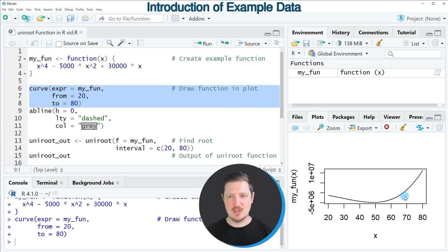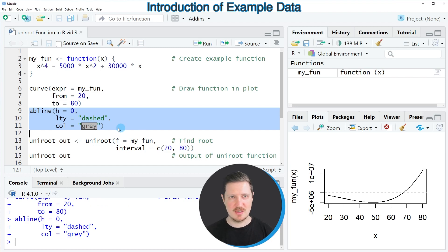Now in order to specify at which position the root is appearing, it makes sense to add an AB line at the point 0. We can do that as you can see in lines 9 to 11. After running lines 9 to 11 of the code, you can see that a dashed gray line is added at the horizontal point y equals 0.